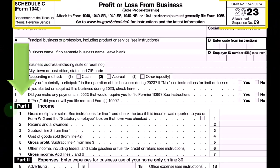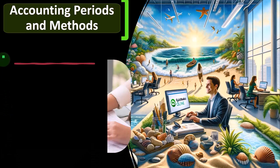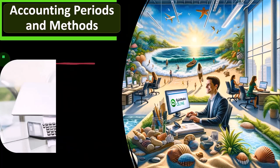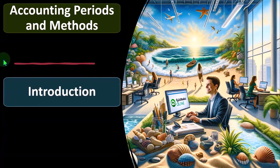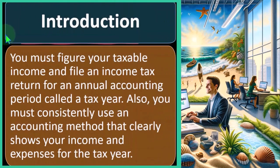This covers the income statement format — income minus expenses. Looking at accounting periods, which are as regular as the menstrual cycle and as irritating, we've got accounting periods and methods. You must figure your taxable income and file an income tax return for an annual accounting period called a tax year.